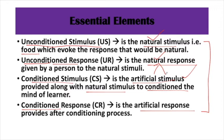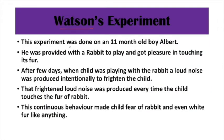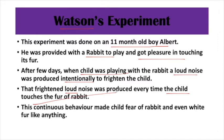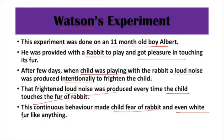This is the conclusion of Pavlov's experiment. Next, Watson performed an experiment on an 11-month-old boy named Albert. He gave Albert a rabbit to play with, and Albert got pleasure in touching its fur. A few days later, when the child was playing with the rabbit, a loud noise was produced intentionally to frighten the child. Every time the child touched the fur of the rabbit, a loud noise was produced. This continuous behavior created a fear of rabbits in the child. Even if there was any white, fur-like thing, the child started to be afraid.